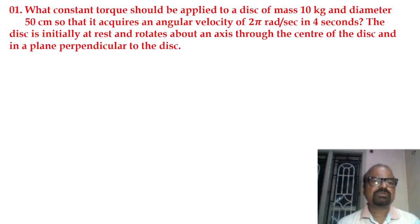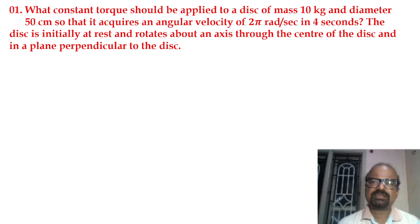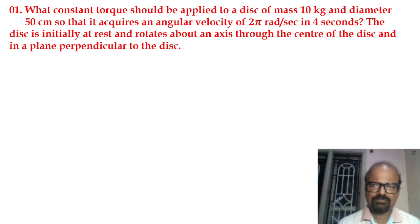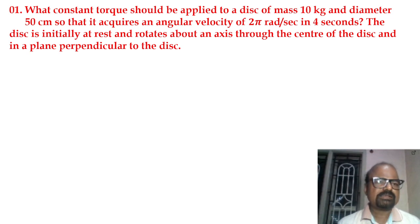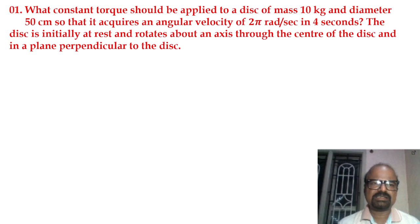What constant torque should be applied to a disk of mass 10 kg and diameter 50 cm so that it acquires an angular velocity of 2π radian per second in 4 seconds? The disk is initially at rest and rotates about an axis through the center of the disk in a plane perpendicular to the disk.